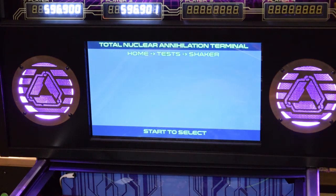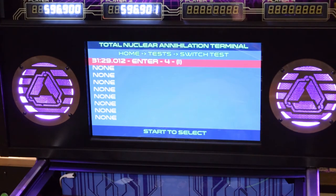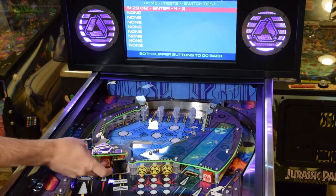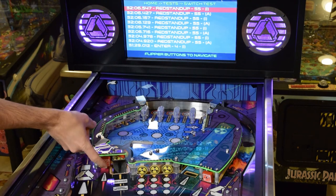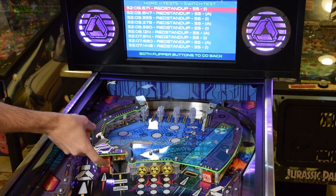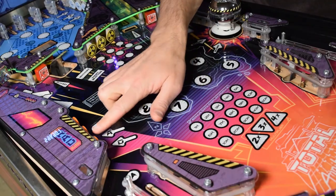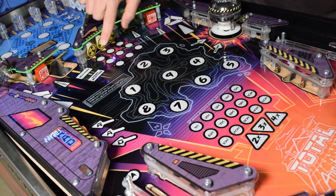While in switch test mode, any time you tap a switch on the playfield, it should register on the menu. This particular target needed a lot of force in order to register a hit. This leads me to believe the gap on the switch is too big. While in switch test mode, it's a good idea to check the other switches on the playfield to see if they should be adjusted as well.